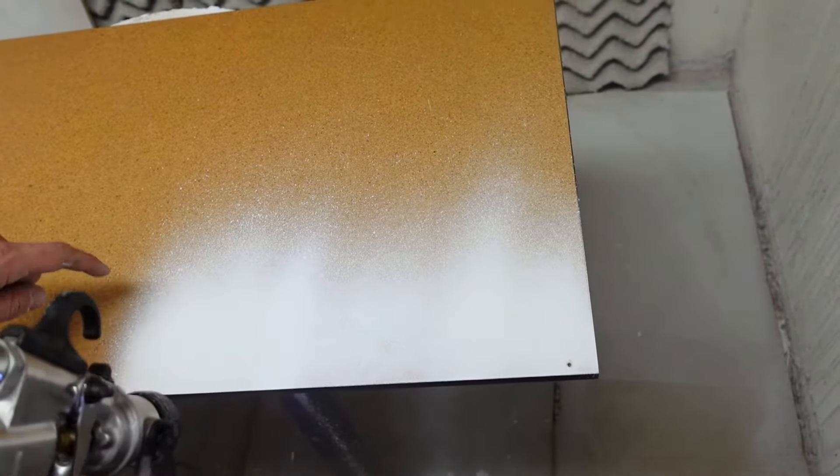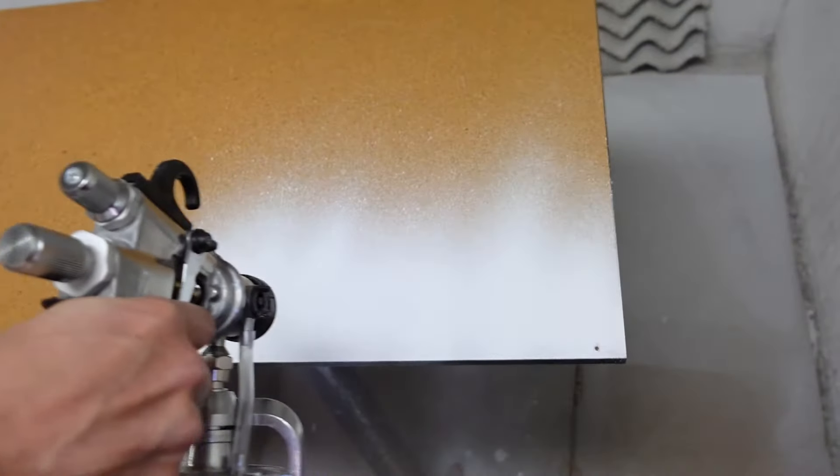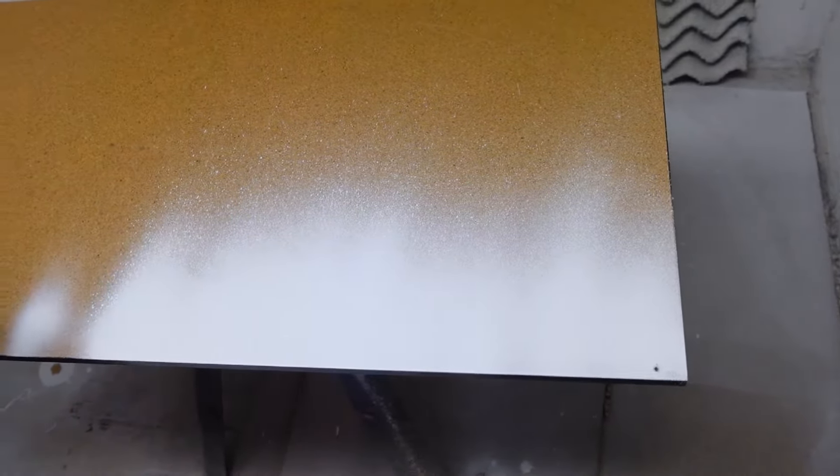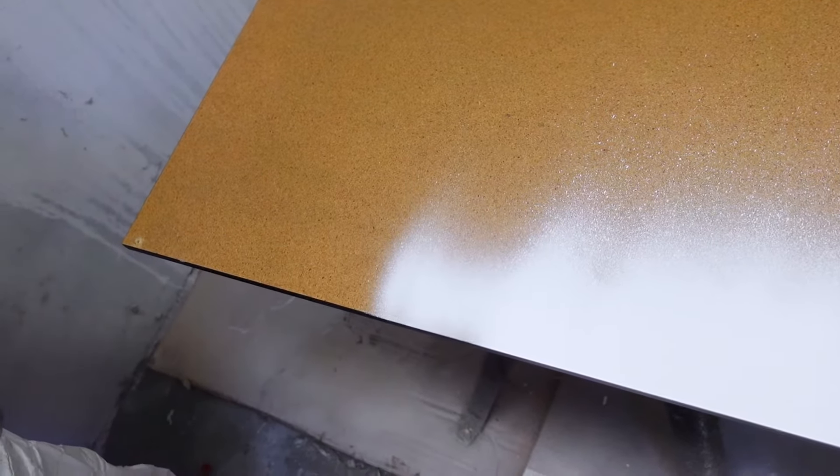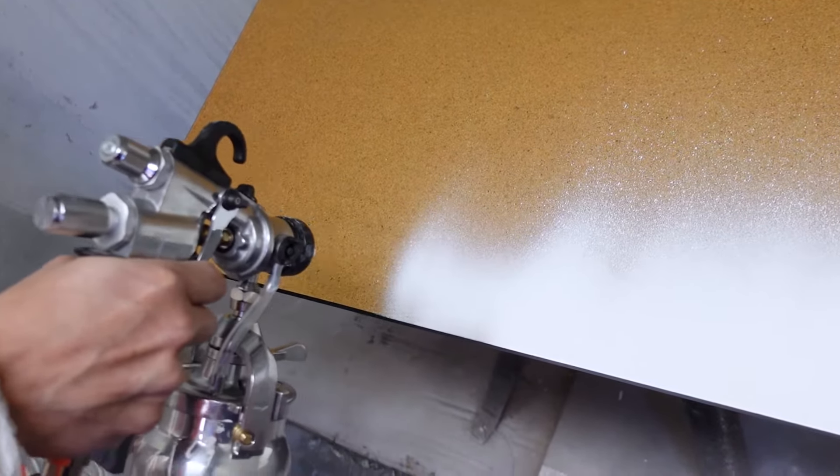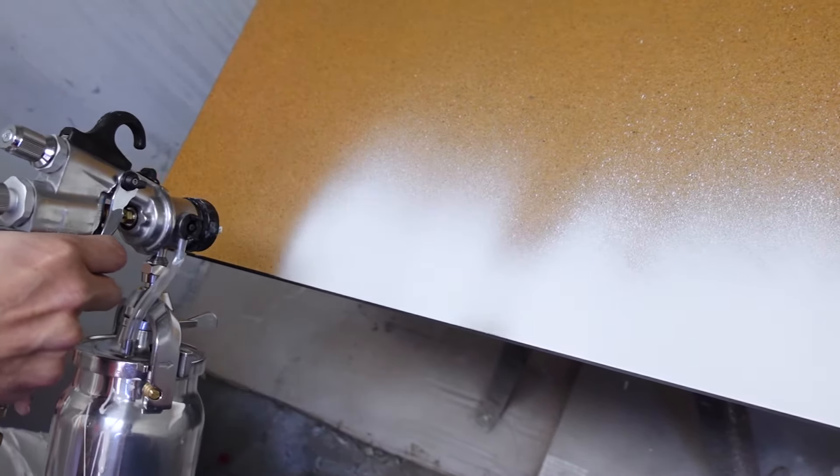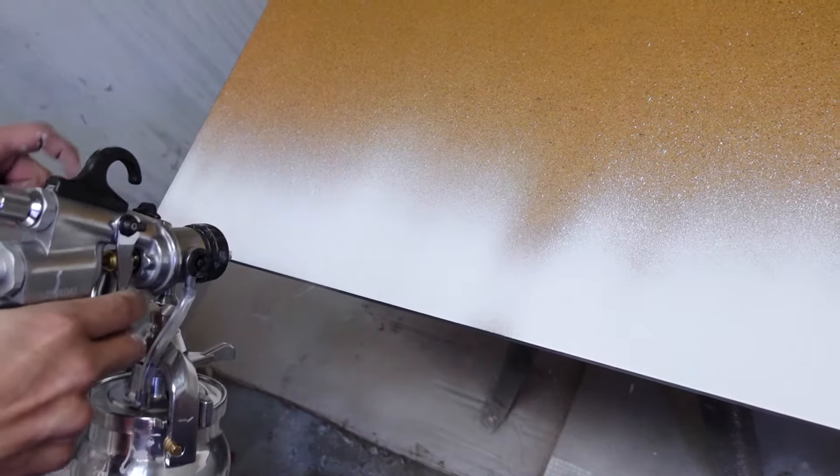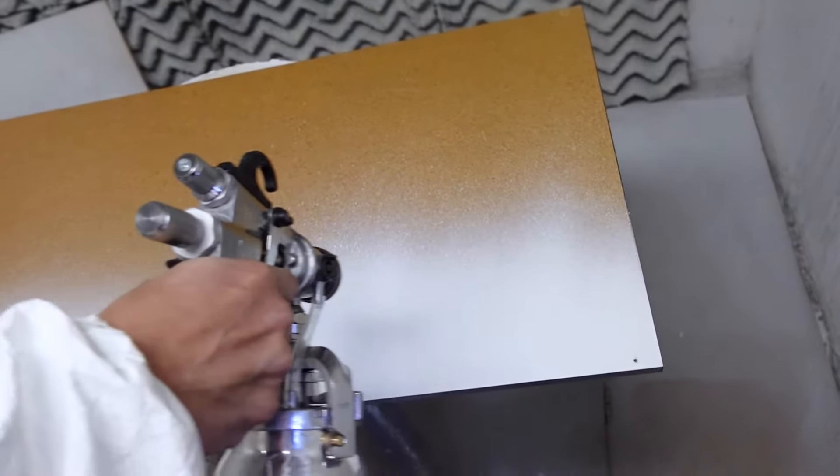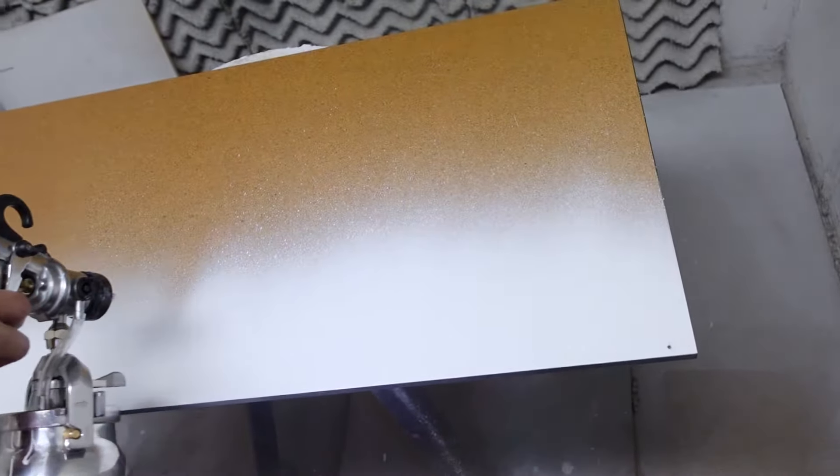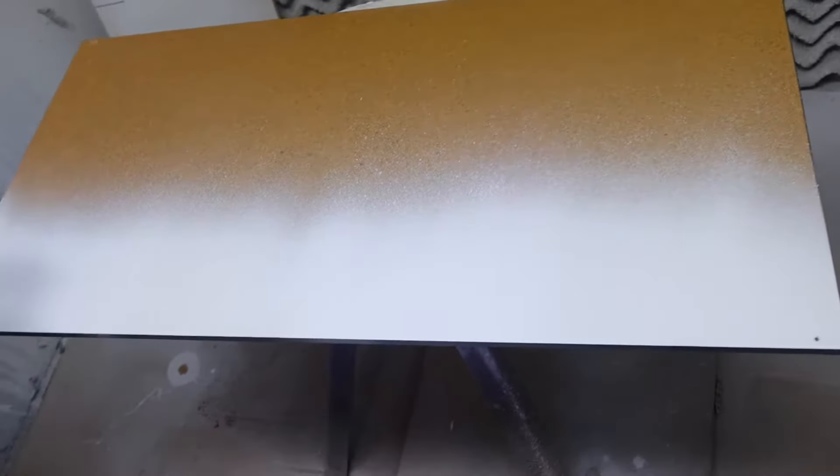You can see in the middle of my pattern, I have a little bit of orange peel, and that's partially due to the reduced performance of a four stage. My pattern's also smaller by a little bit. You could certainly spray this product with a four, but we're going to switch over now to a six stage.